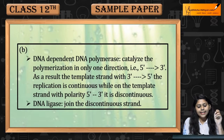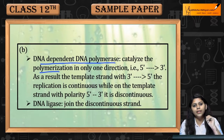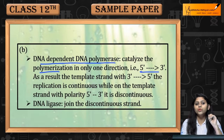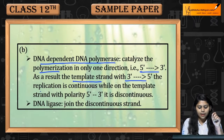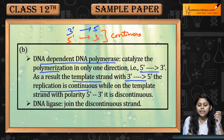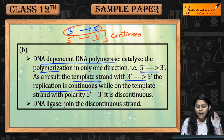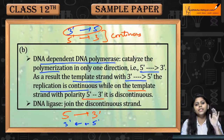DNA-dependent DNA polymerase enzyme है, जो catalyze करता है polymerization in only one direction — that is, 5' to 3' direction. As a result, template strand with 3' to 5' — the replication is continuous. अगर template is 3' to 5', तो उसकी strand 5' to 3' बनेगी — continuous. While, अगर template strand 5' to 3' है, तो उसकी strand discontinuity में बनेगी — discontinuous strand बनेगी.